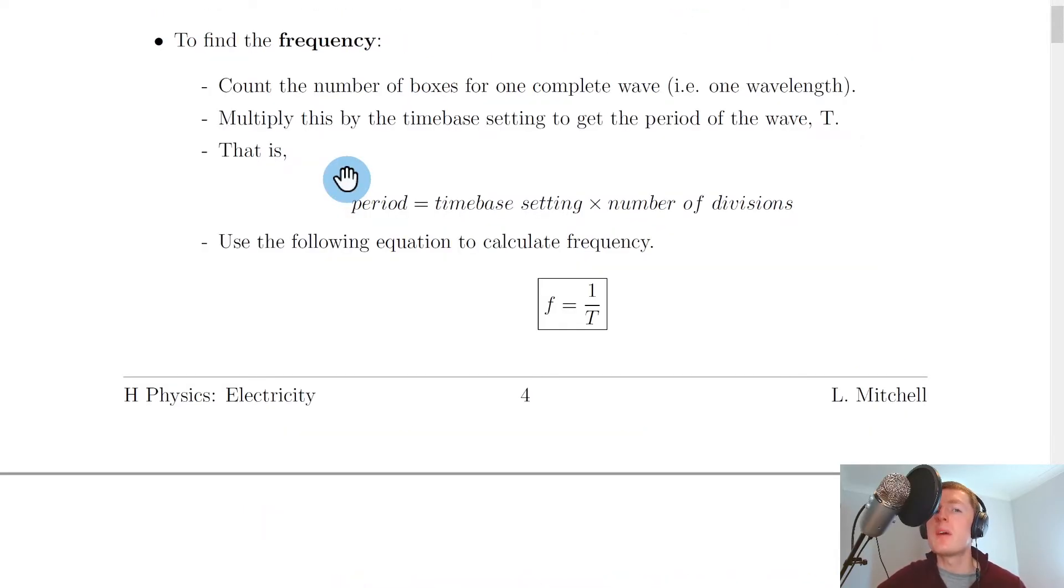To find the frequency, there's a bit more involved. We're dealing with the x-axis or the horizontal plane on the oscilloscope screen. First, count the number of boxes for one complete wave, one wavelength. This could be from one crest to the next adjacent crest, one trough to the next adjacent trough, or from one point in the wave to the same point on the next wave.